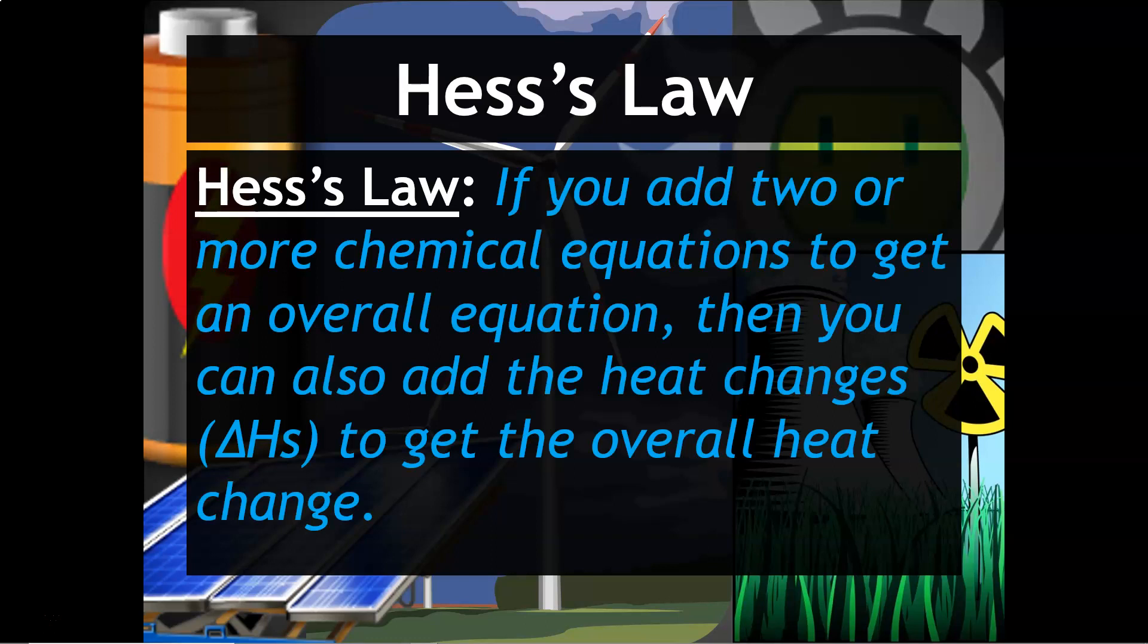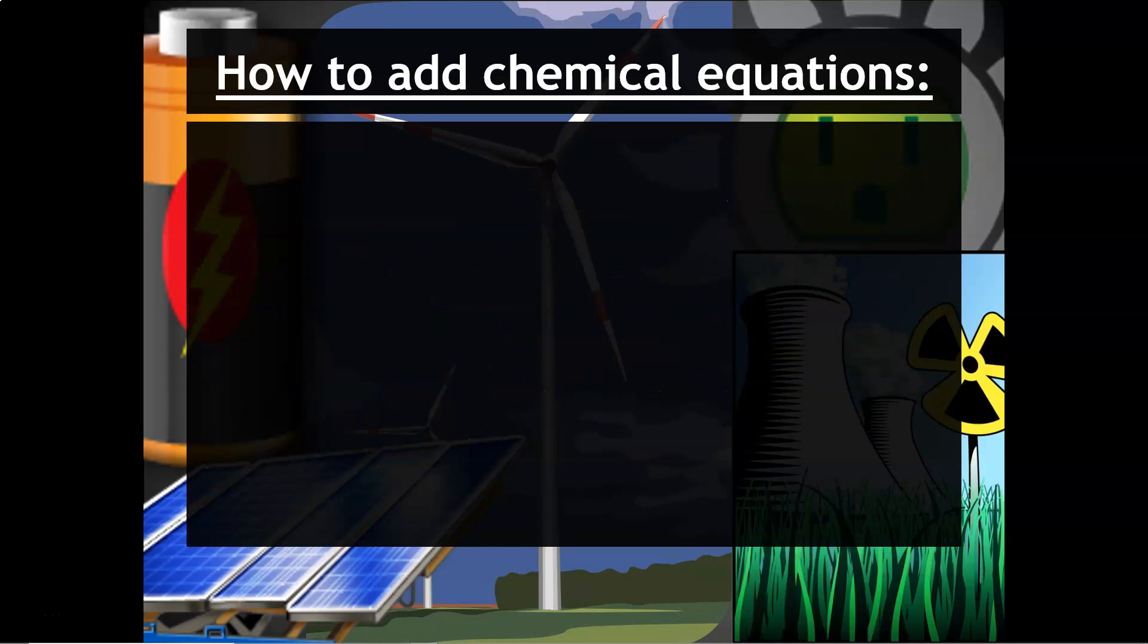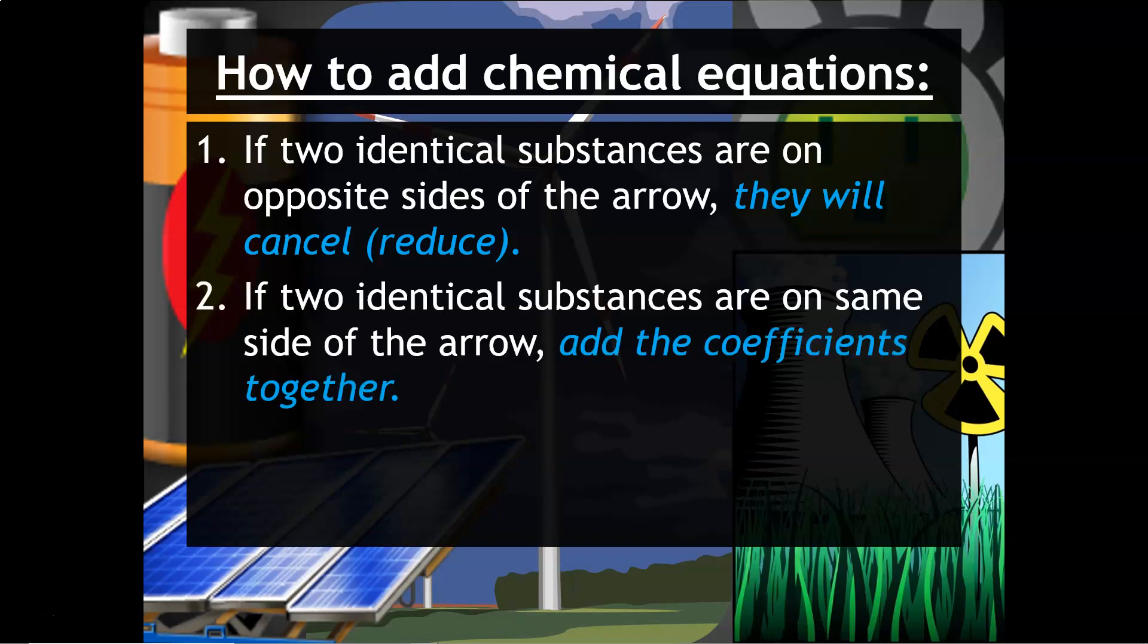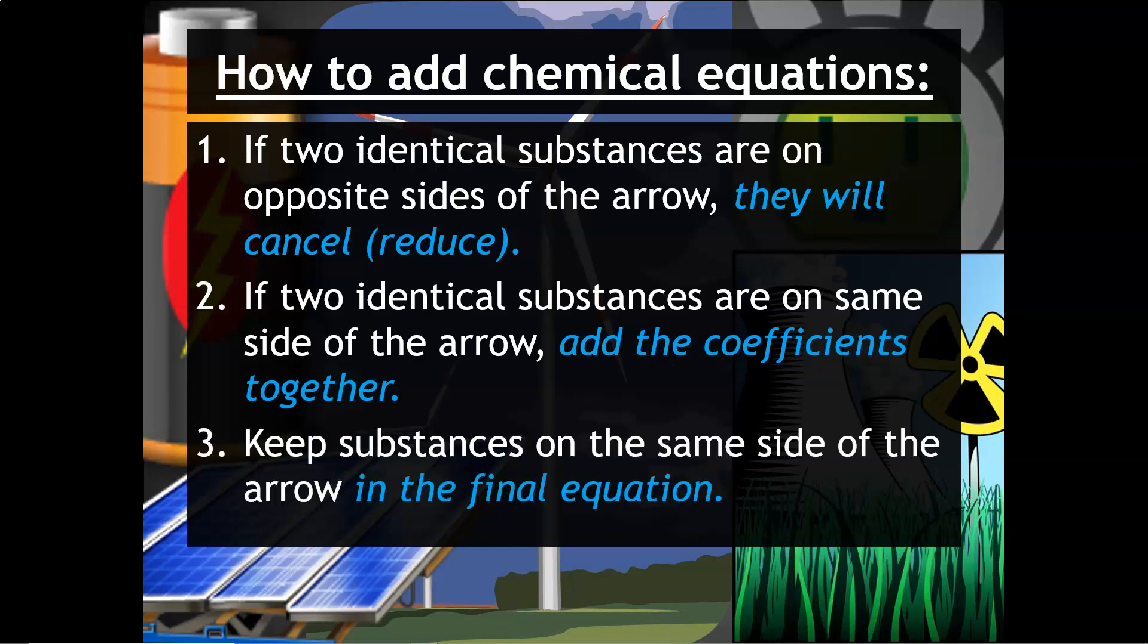Hess's Law says if you add two or more chemical equations to get an overall equation then you can also add the heat changes or the delta H's to get the overall heat change. The first rule is how to add chemical equations. If you have two identical substances on opposite sides of the arrow they will cancel or reduce. If you have two identical substances on the same side of the arrow you have to add the coefficients together.